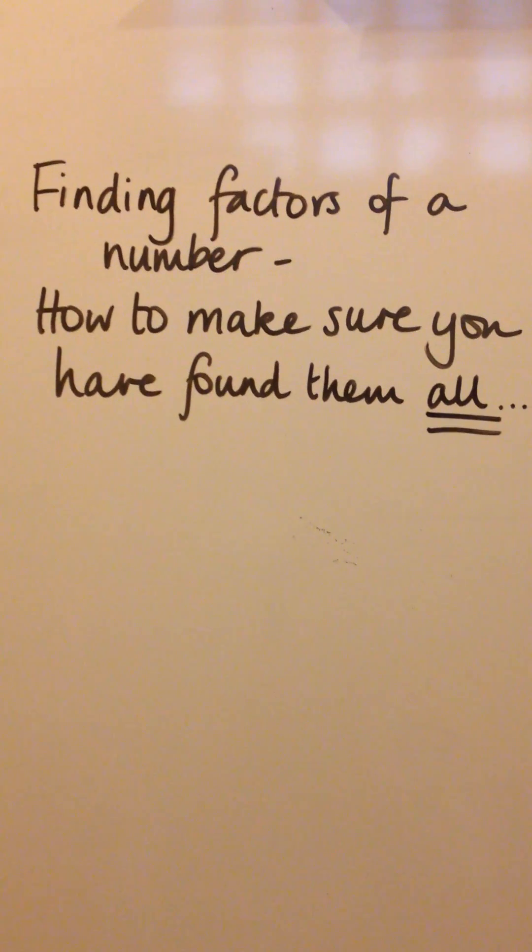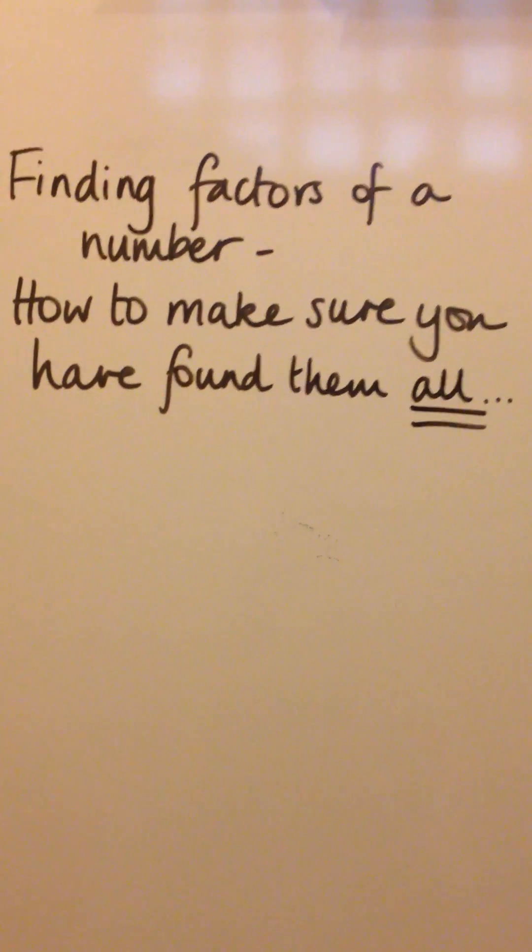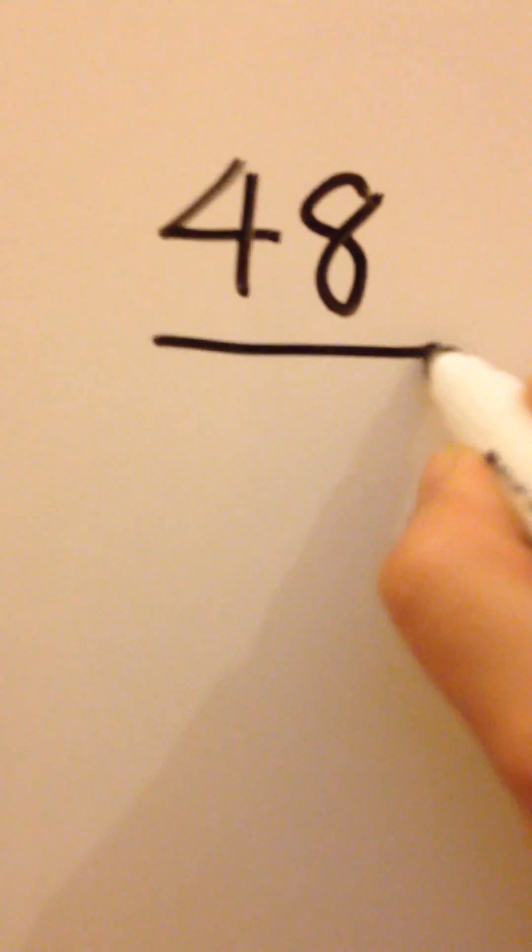Here's a surefire way for finding all the factors of a number. We'll start with 48. Write down the number, underline it.